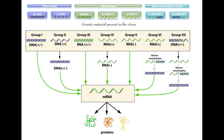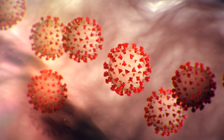Group 1 are the double-stranded DNA viruses, which include smallpox. Group 2 are the single-stranded DNA viruses, including the parvovirus that infects dogs. Group 3 are double-stranded RNA viruses. Group 7 are the double-stranded DNA reverse transcriptase viruses, which include hepatitis B. Group 6 are the single-stranded RNA reverse transcriptase viruses, which include the retrovirus-like HIV. Group 5 are the antisense single-stranded RNA viruses, which include measles, mumps, ebola, rabies, and influenza. Finally, Group 4, positive-sense single-stranded RNA viruses, is where the coronavirus and the rest of its family belong.